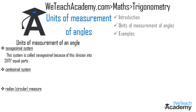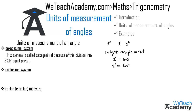The sexagesimal system is named as such because the division is made into sixty equal parts. If a rotation from the initial side to the terminal side is one three-hundred-sixtieth of one revolution, the angle is said to have a measure of one degree, denoted 1°. This degree is divided into sixty equal parts, each called one minute (1'). Each minute is further divided into sixty equal parts, each called one second. So: one right angle = 90°, one degree = 60 minutes, and one minute = 60 seconds.